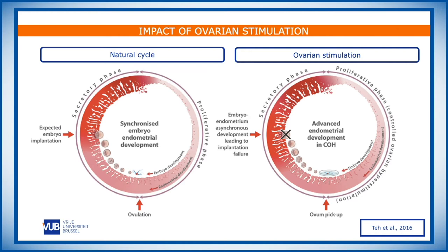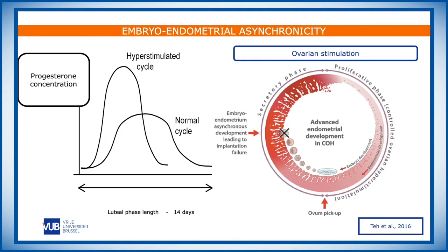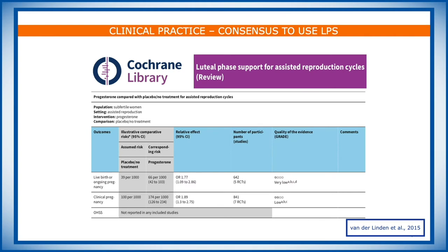When we perform ovarian stimulation, we ask a lot of the endometrium. On the right-hand side of the slide, you see the natural cycle in which everything naturally happens in sync. However, when we stimulate the ovaries, due to the high levels of estradiol in the serum, we see that the embryo and the endometrium are not in sync anymore. We know that after ovarian stimulation, if we want to transfer the embryo fresh in the same cycle, we need to supplement the luteal phase. In this Cochrane review, you see that clearly there is an advantage of giving luteal phase support after ovarian stimulation.